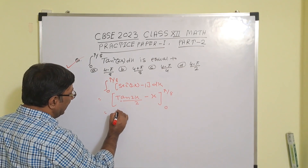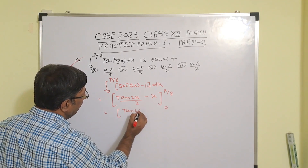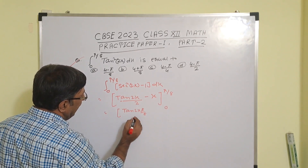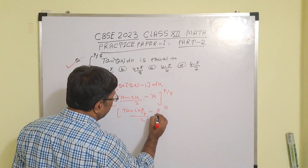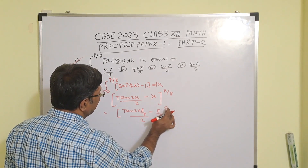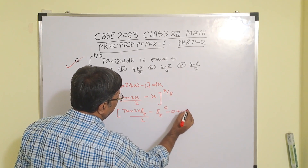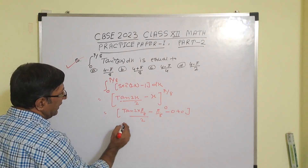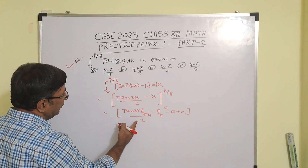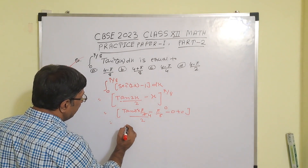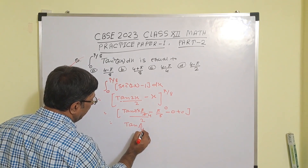Put the value of the upper limit: tan(2 × π/8) divided by 2, minus x which is π/8. Then minus the lower limit value, which gives 0 for both terms. So this simplifies — 2 × π/8 is π/4, giving tan(π/4) by 2.